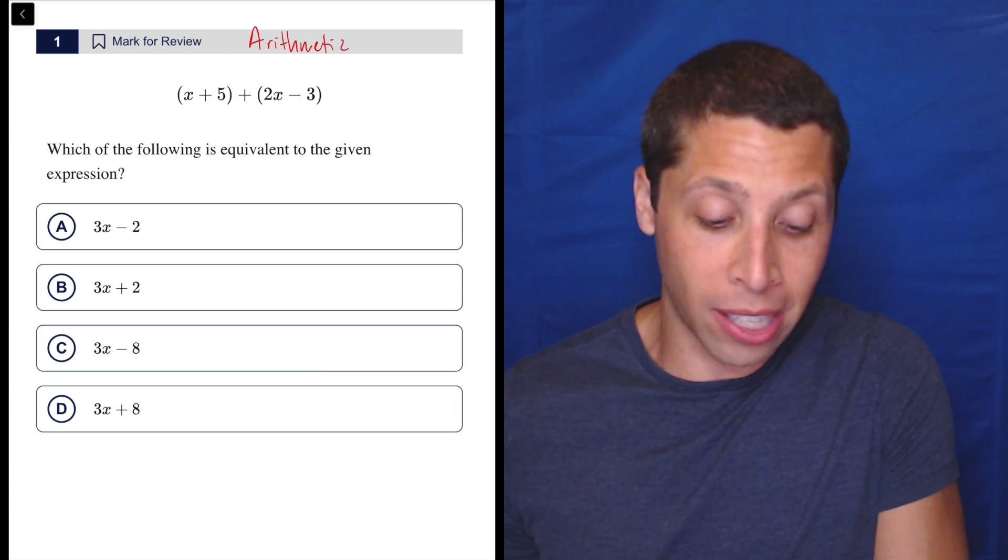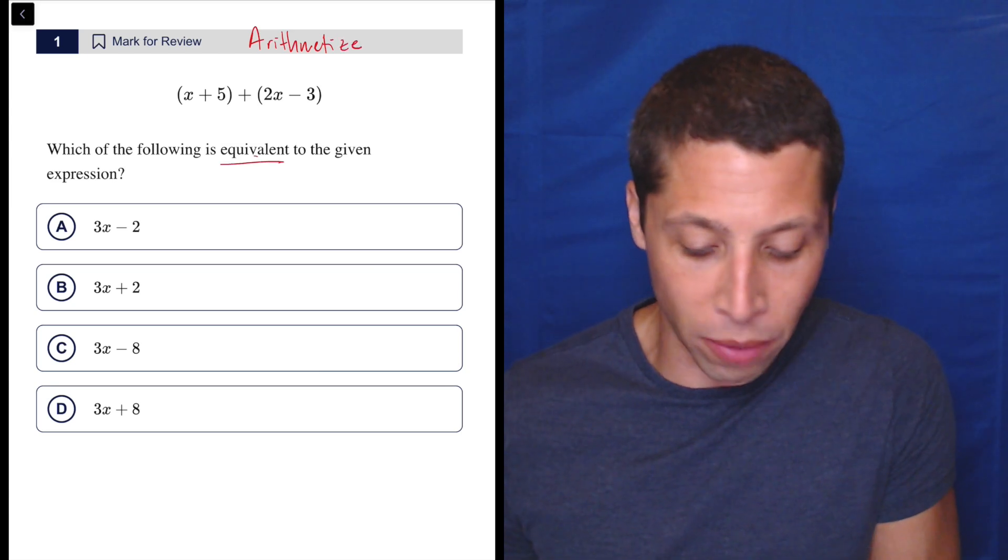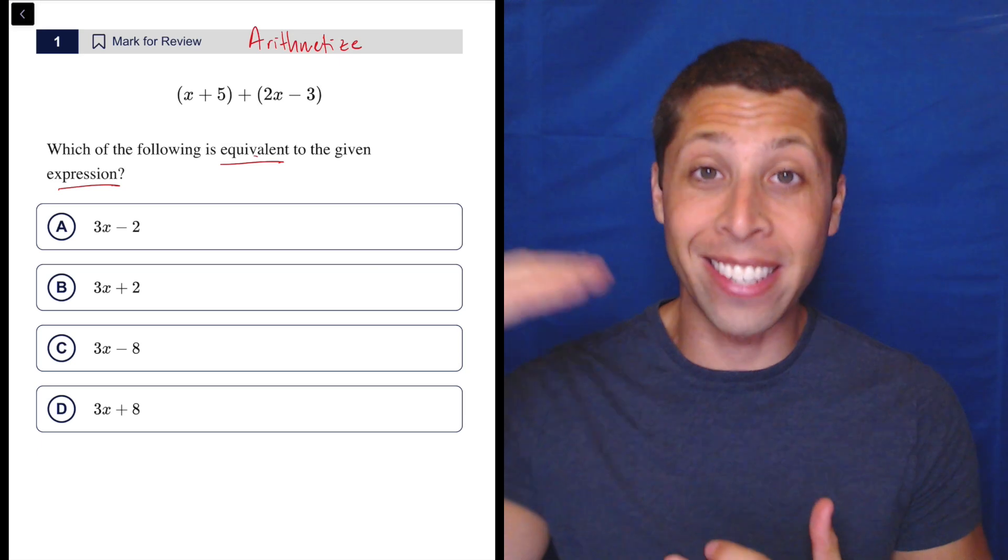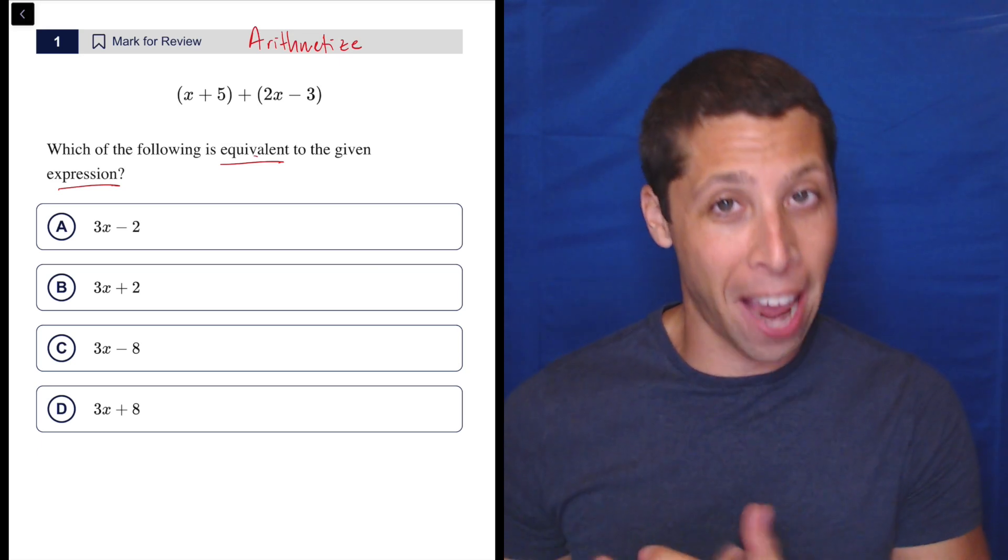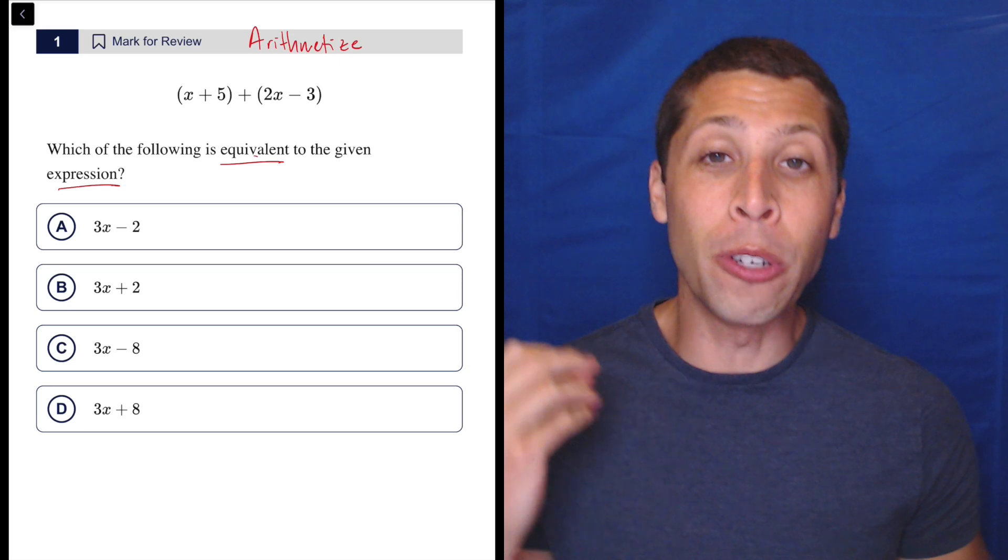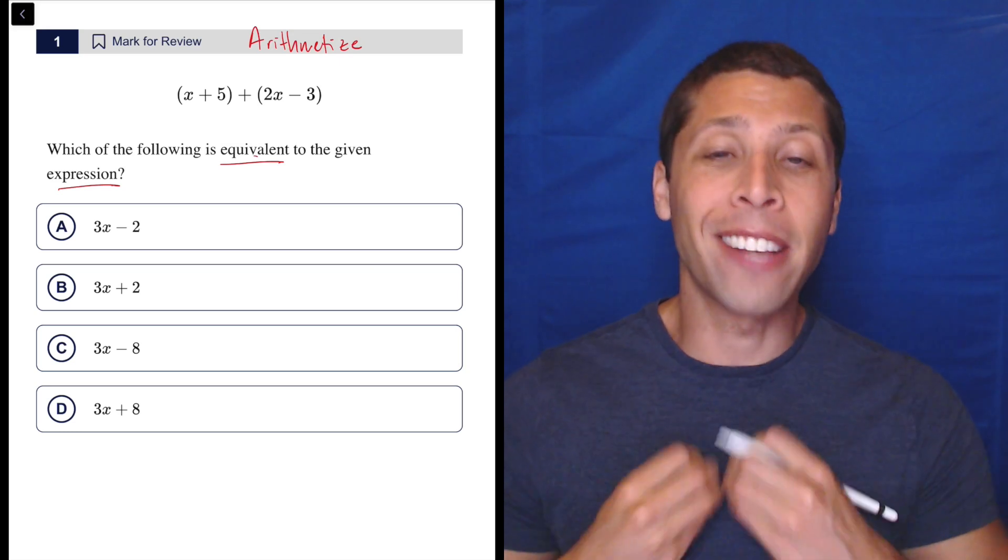This is where we see a question like this. Often it says equivalent expression somewhere in the question. There's going to be some sort of variable that is in the question itself, and then it carries through into the answer choices. We never need to solve for that variable. You need to recognize both of those things as